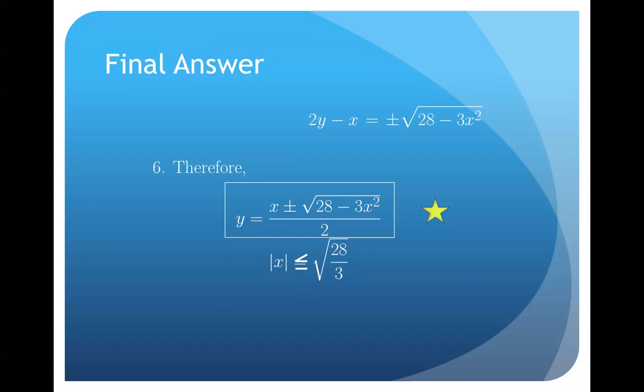Where here, I have written it in a shortcut method as the absolute value of x should be less than or equal to the square root of 28 over 3. All right, that was our example. I hope you guys understood everything. If you have any questions, please let me know. And if not, good luck and have fun.